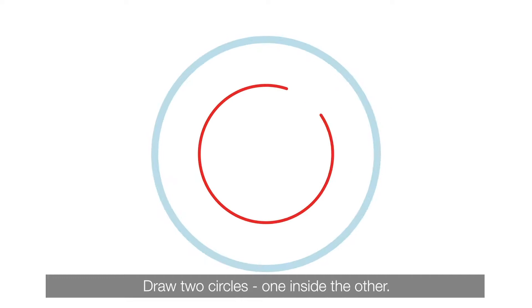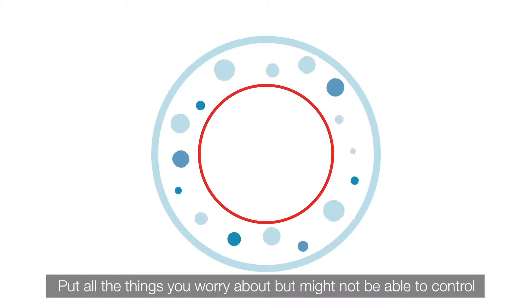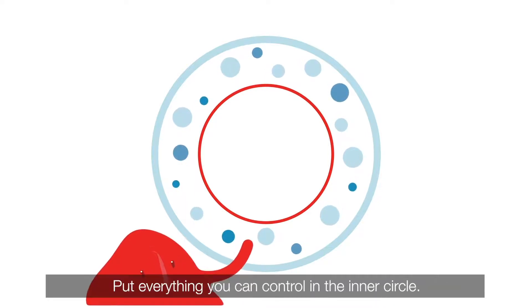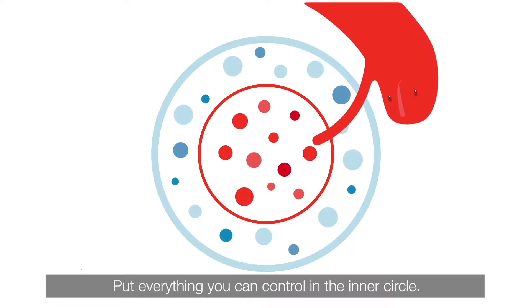Draw two circles, one inside the other. Put all the things you worry about but might not be able to control in the outer circle. Put everything you can control in the inner circle.